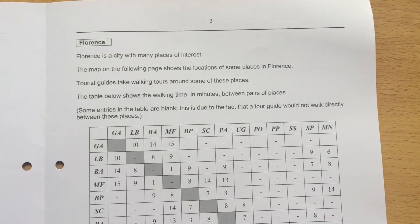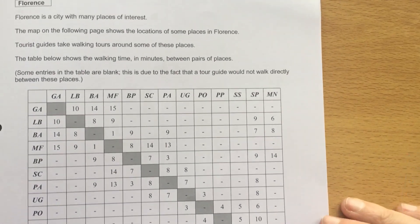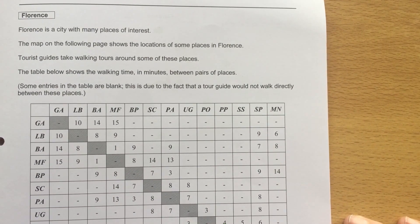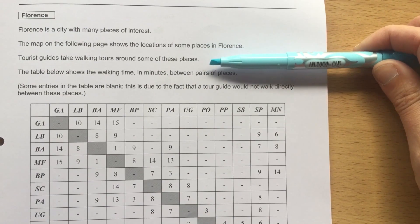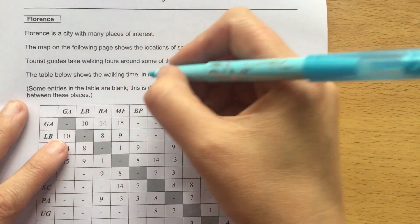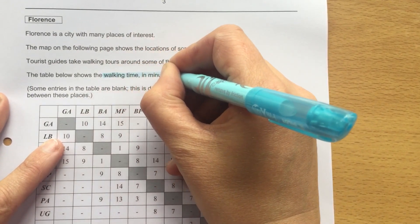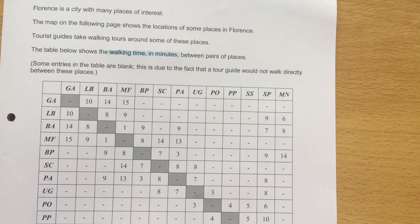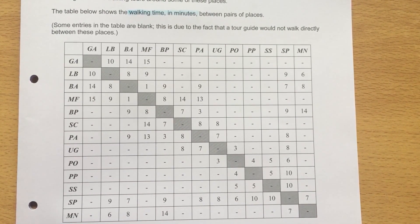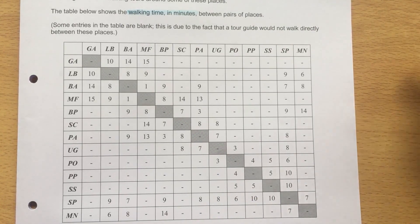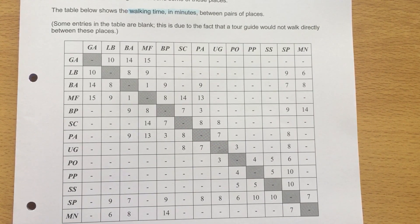On page 3, we are told that we are dealing with Florence — a city with significant points of interest. We are told about walking tours, that we are dealing in walking time in minutes, and the fact that some entries are left blank because they wouldn't be used. We are given this table, which is going to be used for Prim's algorithm, nearest neighbour, as well as the combination of the two in the Travelling Salesman problem.